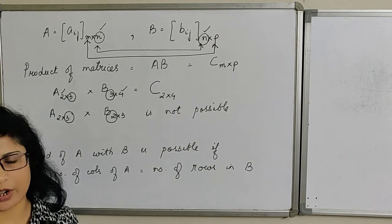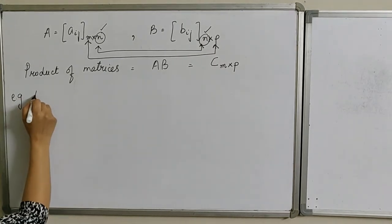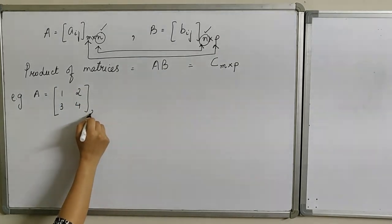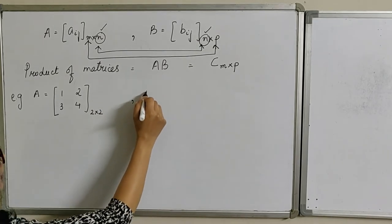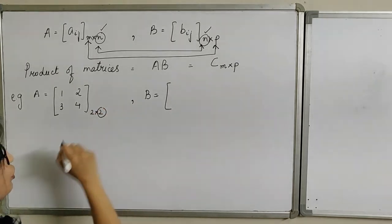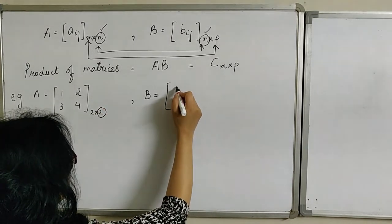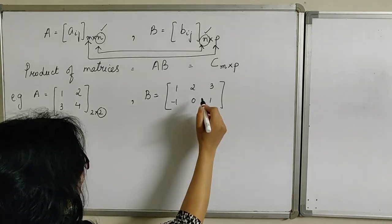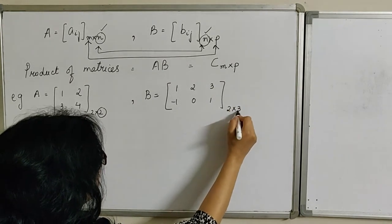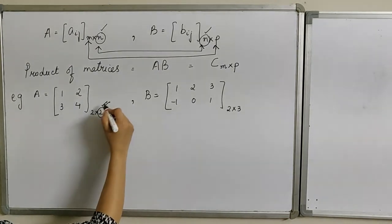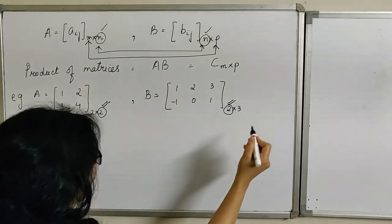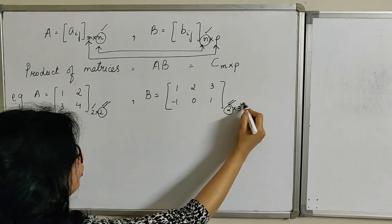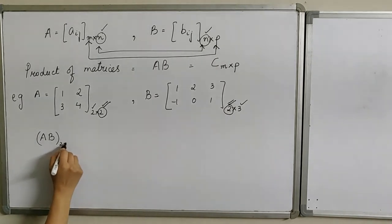As an example, let's take matrix A with elements 1, 2, 3, 4 — a matrix of order 2 by 2 — and matrix B of order 2 by 3. Since the number of columns of A equals the number of rows of B, the product AB will be a matrix of order 2 by 3.